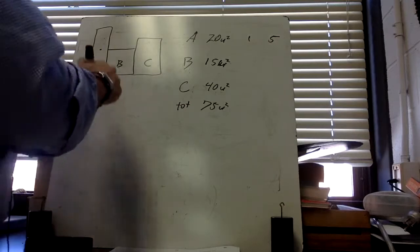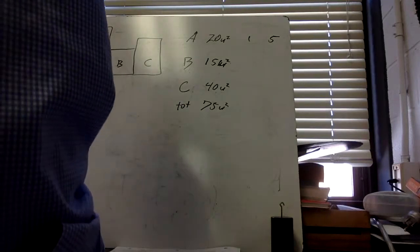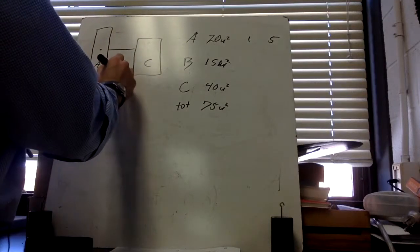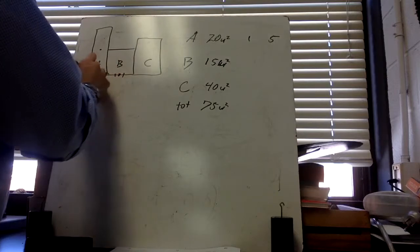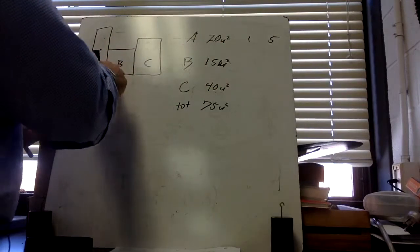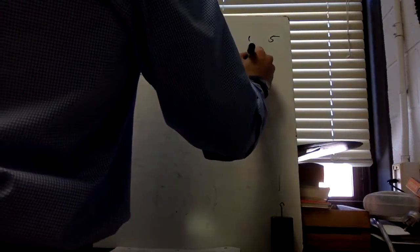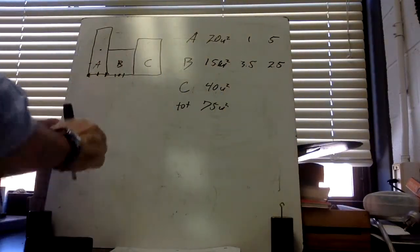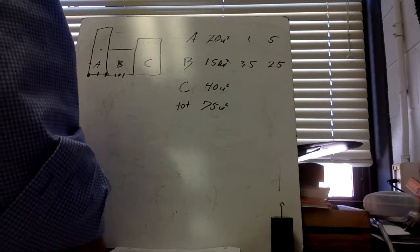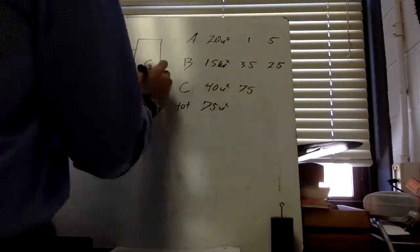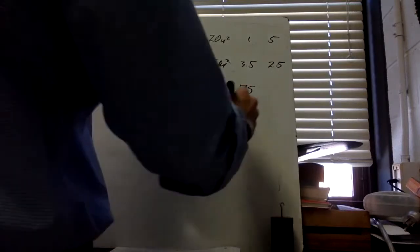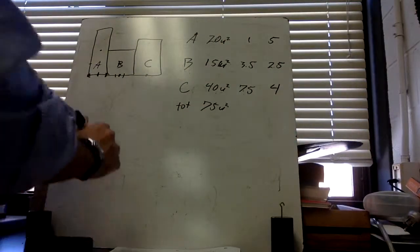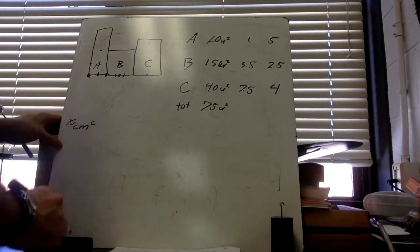For section B: it's 3 units wide, so the center is 1.5 units in, but measured from the same origin that gives an x-coordinate of 3.5. It's 5 units tall, so y = 2.5 for section B's center. For section C: the x-coordinate of the center is 7.5 units from the origin, and the y-coordinate is 4 units. We must use the same origin for all sections.